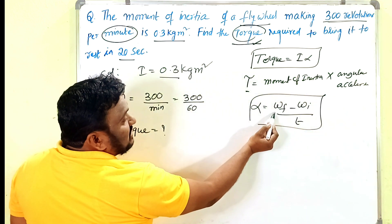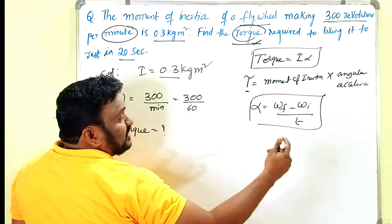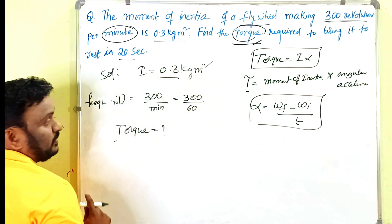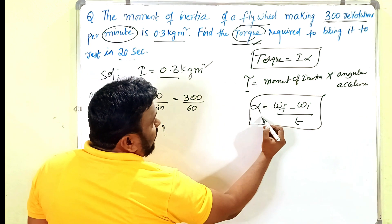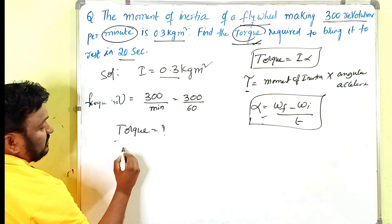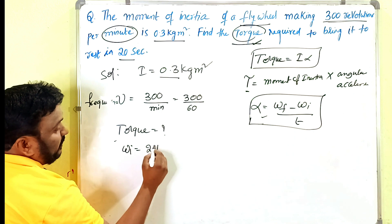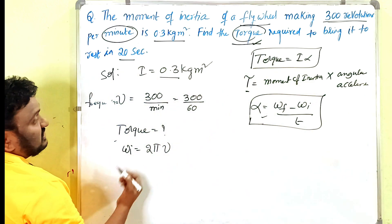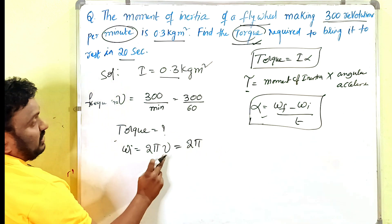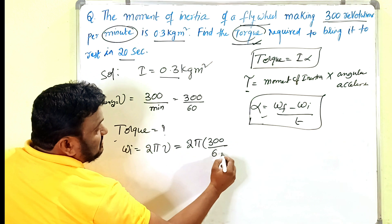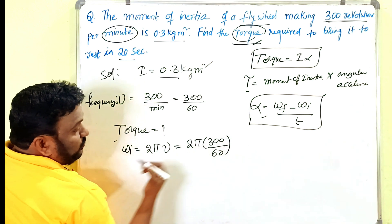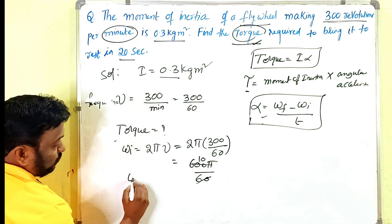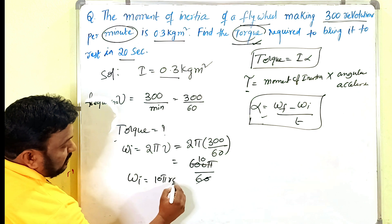To find the torque, we first need to find the angular acceleration. The initial angular velocity is ω_i = 2π × ν = 2π × (300/60) = 2π × 5 = 10π radians per second.